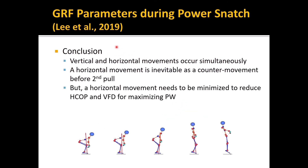The conclusion of Study 1: vertical and horizontal movements occur simultaneously during the power snatch. Horizontal movement is inevitable as a counter-movement before the second pull during the power snatch, but the horizontal movement needs to be minimized to reduce H-COP and VFD for maximizing power.